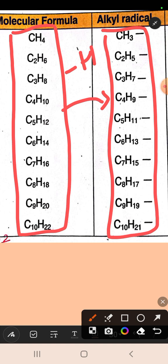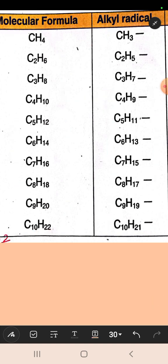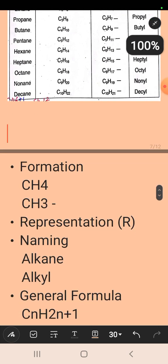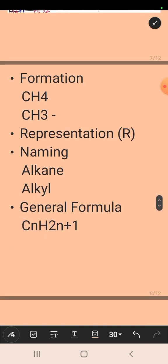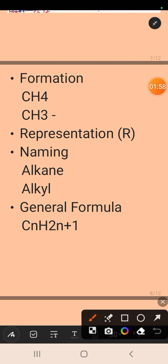That is why alkyl radicals are defined as derivatives of alkanes—because they are formed from alkanes. Next is formation: how are they formed? They are formed by the removal of a hydrogen from any alkane. The example here is methane.